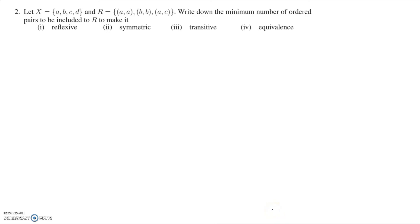In this video we will solve problems from Exercise 1.2, Question 2. Let X equal {a, b, c, d} and let R be the set of all ordered pairs (a,a), (b,b), and (a,c). Write down the minimum number of ordered pairs to be included in R to make it: first reflexive, second symmetric, third transitive, and fourth an equivalence relation.